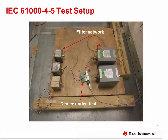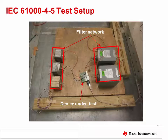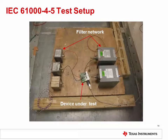For the surge test, the device under test is placed on a small wooden platform and connected to its power supply through a robust LC filter network. The surge generator is connected to the capacitors of the LC filter, allowing the device under test to be exposed to surge conditions while protecting the power supply. The surge voltage is tested at both positive and negative polarities, with connections made using all possible combinations across the device under test's power supply terminals, both differentially and common mode.